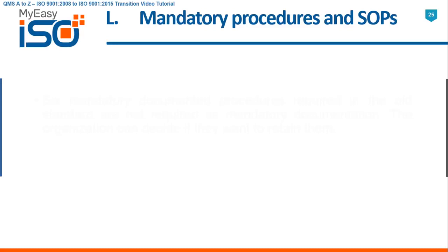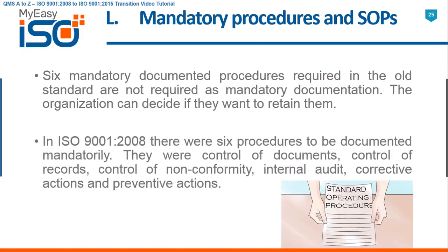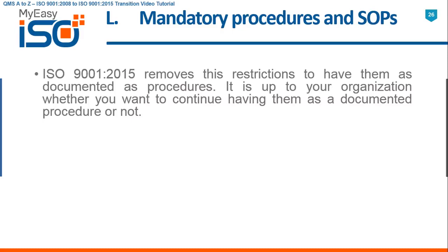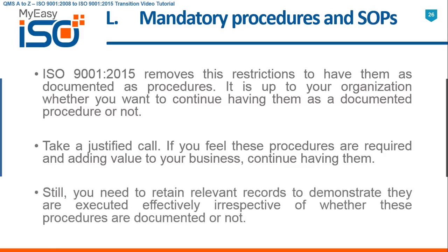L — Mandatory Procedures and SOPs. Six mandatory documented procedures required in the old standard are not required as mandatory documentation. The organization can decide if they want to retain them. In ISO 9001 2008, there were six procedures to be documented mandatorily: control of documents, control of records, control of nonconformity, internal audit, corrective actions, and preventative actions. ISO 9001 2015 removes this restriction. It is up to your organization whether you want to continue having them as documented procedures or not — take a justified call. If you feel these procedures are required and adding value, continue having them. You still need to retain relevant records to demonstrate they are executed effectively, irrespective of whether these procedures are documented or not.